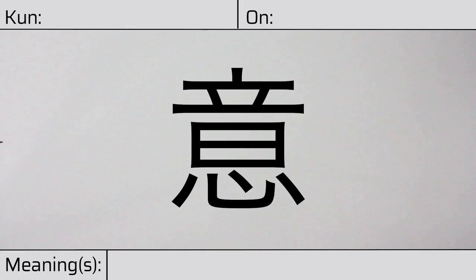Welcome to this lesson on Japanese kanji. Today, we'll be discussing this character. This kanji has no kunyomi and it has onyomi of i.